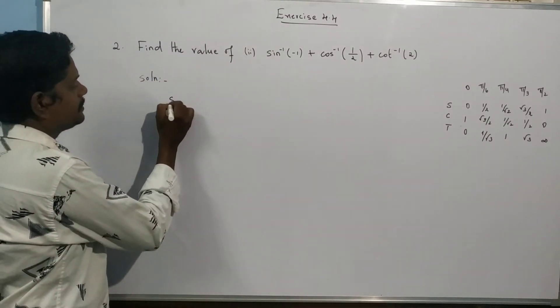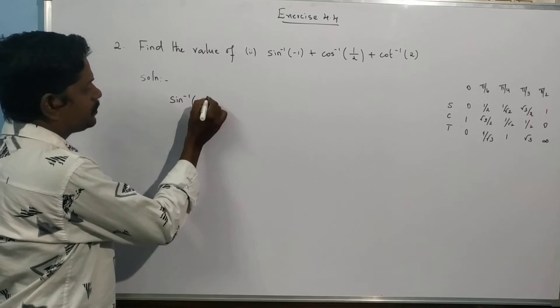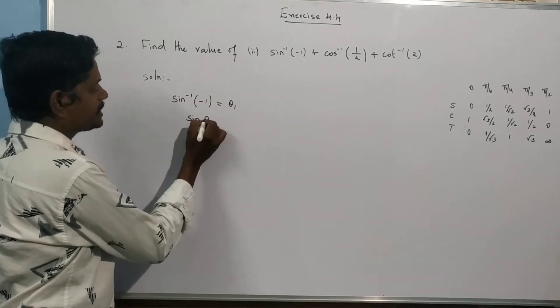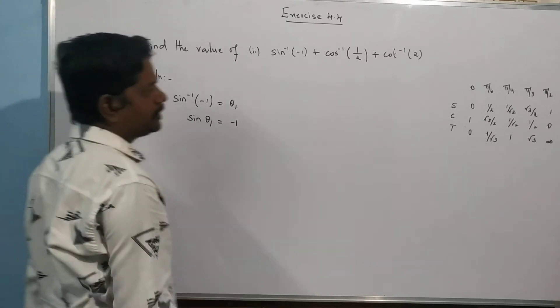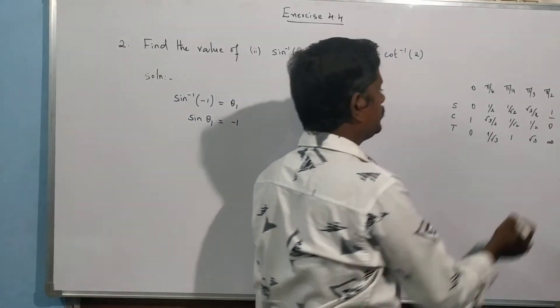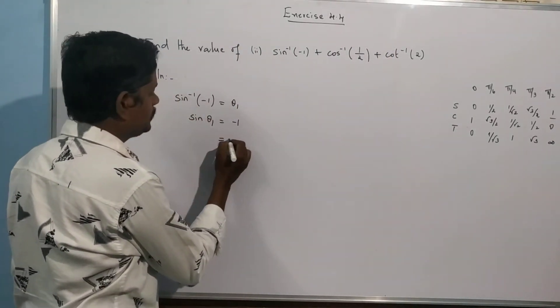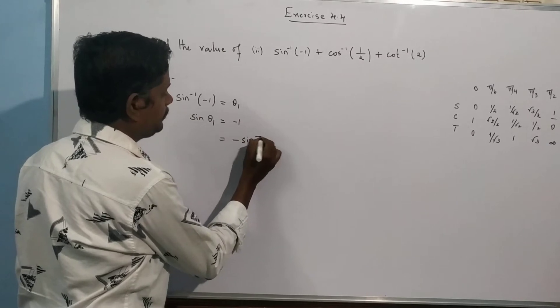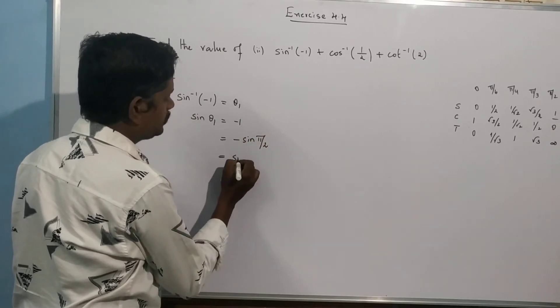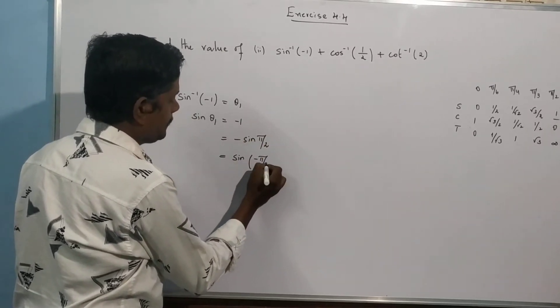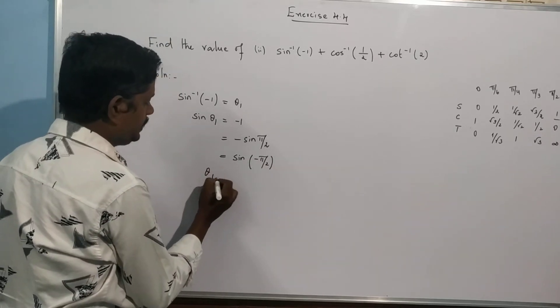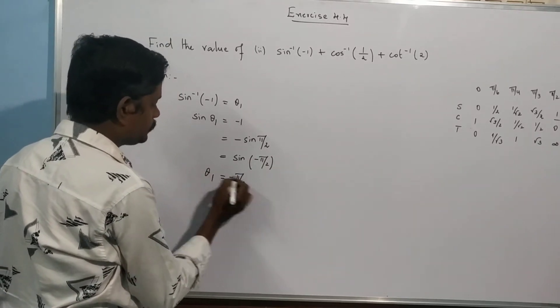First, sin inverse of minus 1, this is theta 1. Sin theta 1 equal to minus 1. This is minus sin pi by 2. Sin inverse of minus 1 is minus pi by 2, then theta 1 equal to minus pi by 2.